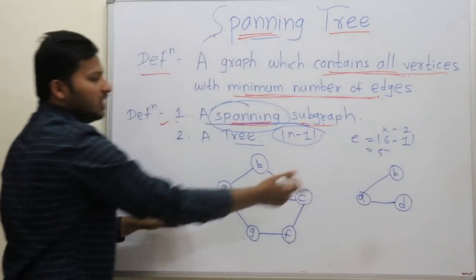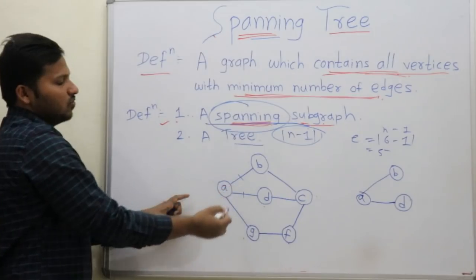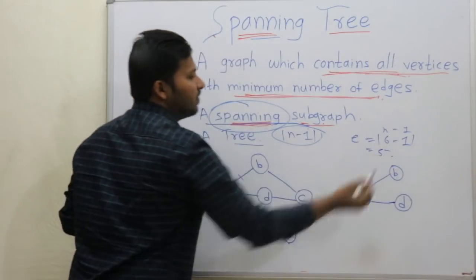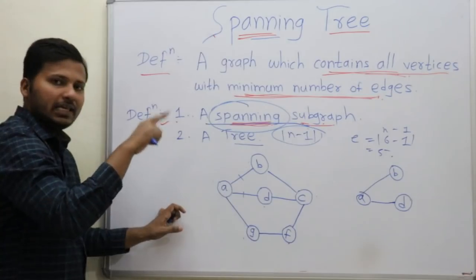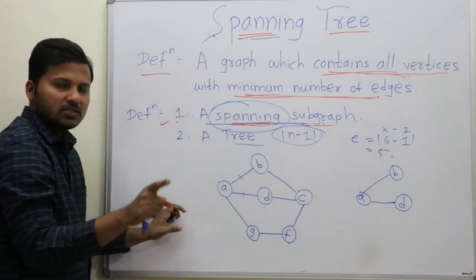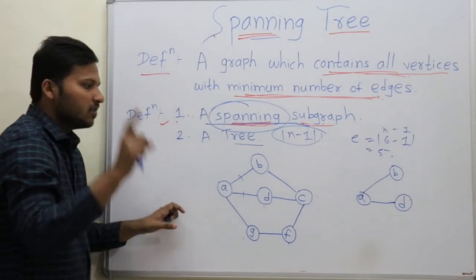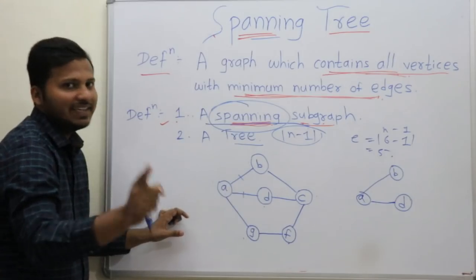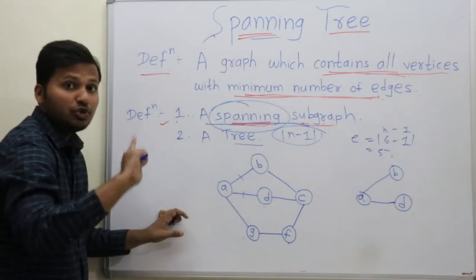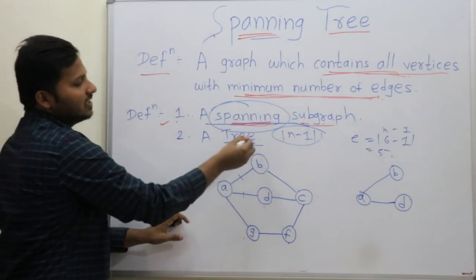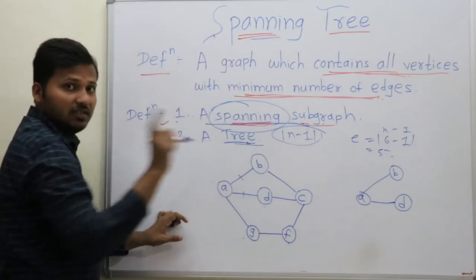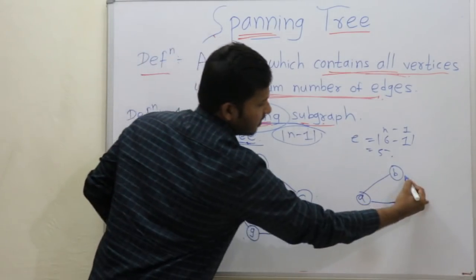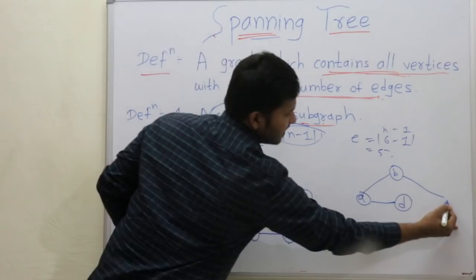How many edges are over? 2 edges are over. We need 3 more to form 5 edges. But while taking the edges, you should always remember that it should not form a cycle — there should not be a cycle, because it is a tree. So now take B, C.